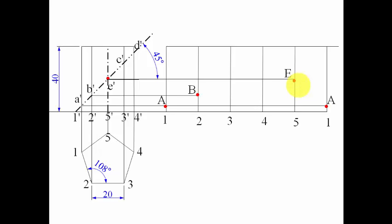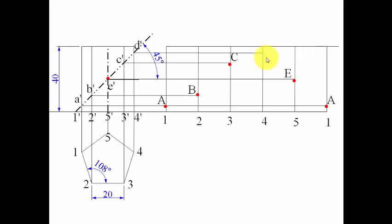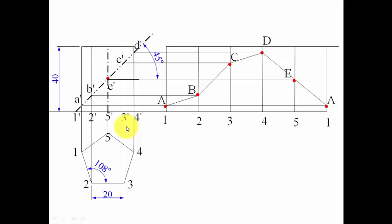Development is popular among students because it's easier than projection of solids or planes. Point C is located by drawing a horizontal line from C', intersecting above position 3. Point D is found similarly, intersecting above position 4. For a prism development, all intersecting points are joined with straight lines — A to B, B to C, C to D, D to E, and back to A — giving the complete development.